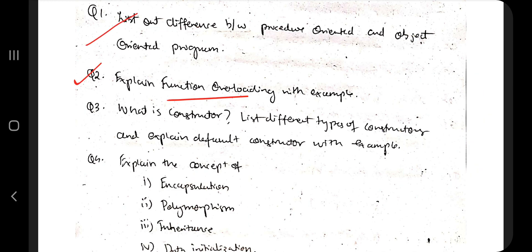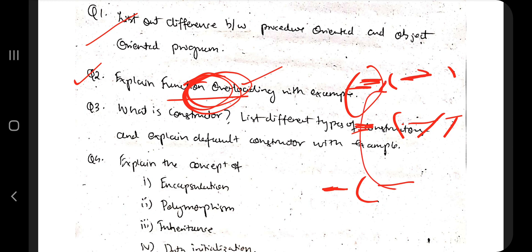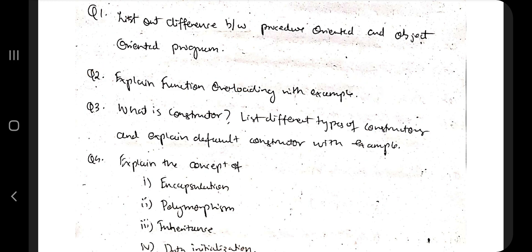The second question is: explain function overloading — a very, very important question from the exam point of view, from a project perspective, and also from an interview perspective. Function overloading implements polymorphism. It basically means you have two functions with the same name but different parameters — the number or type of parameters is different. If you call a function with parameters matching one version, that version is called; if they match the other, that one is called.